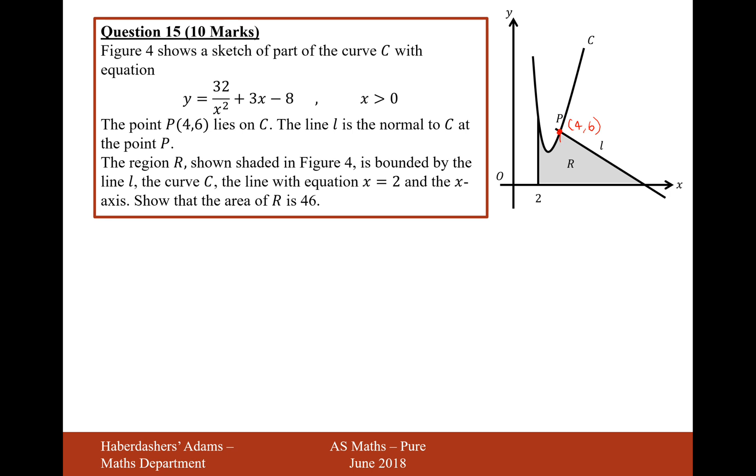So what I'm going to do in this question is divide my section into two parts, R1 and R2. The sum of these two will make the total of 46. On the right-hand side we have a right-angled triangle, and on the left-hand side we have some integration under the region 2 to 4.